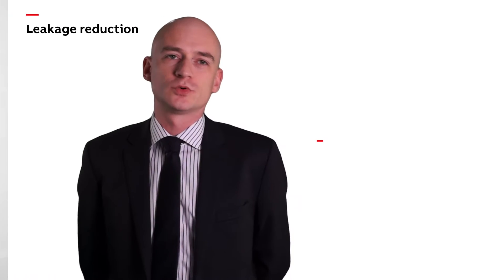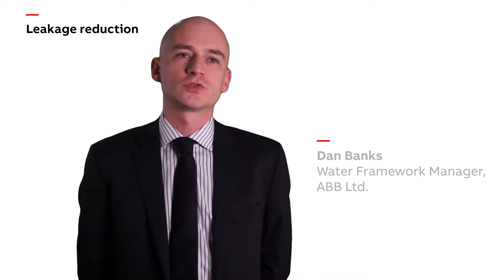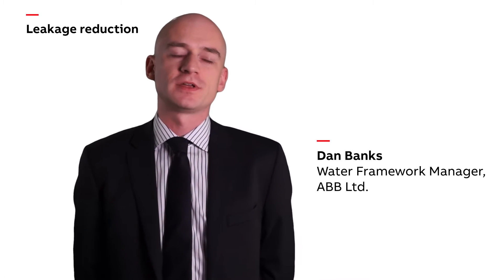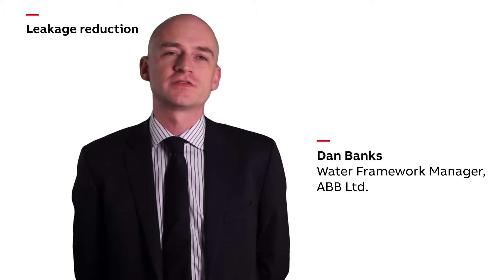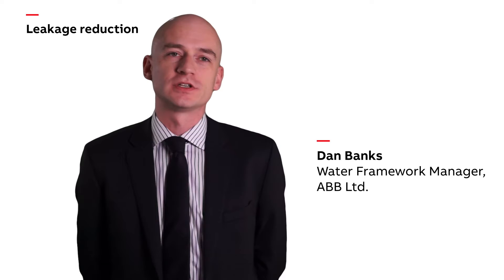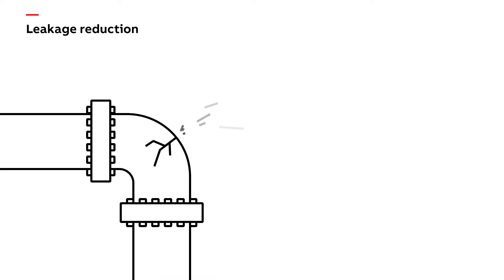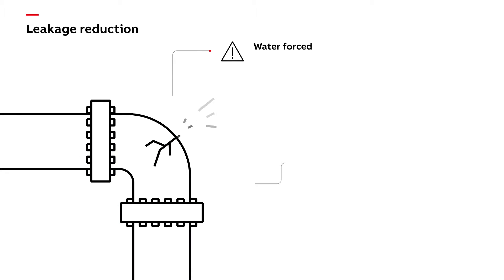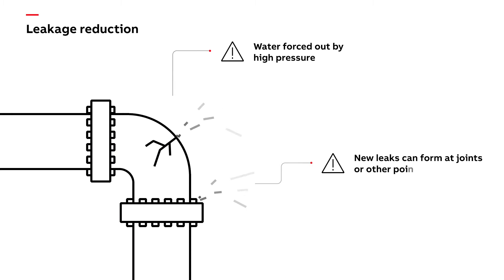Most leakage in water systems is caused by pressure being higher than is actually required or demanded. Water is forced out through any existing leaks. New leaks can be generated at any points of strain, such as joints in the pipework.